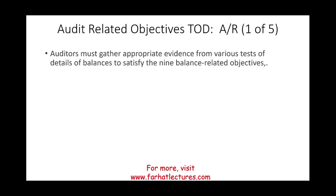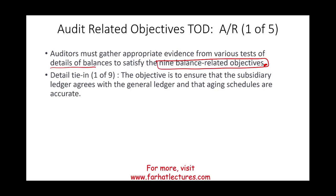As an auditor, you must gather appropriate evidence for various tests of detailed balances to satisfy the nine related audit objectives. There are nine related audit objectives, and I'm going to go through them one by one. The first one — one of nine — is detailed tie-in. All it means is we want to make sure that the sub-ledgers, the subsidiary ledgers, agree with the general ledger and that the aging schedules are accurate.